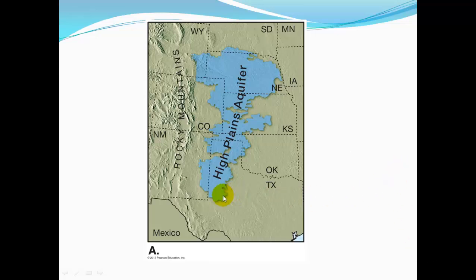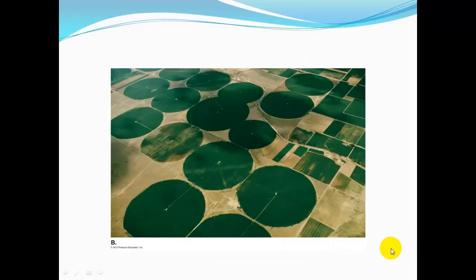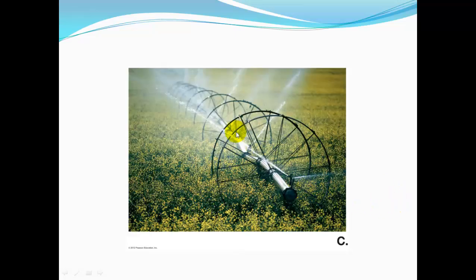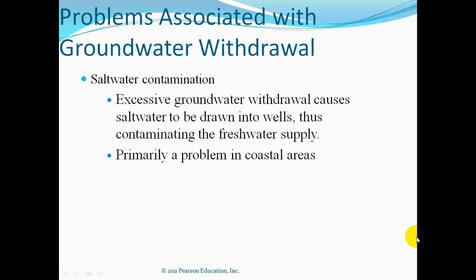Here's an example of the High Plains aquifer — you can see how many states it crosses. It's a resource you really need to manage on a regional level to protect it. These are irrigation fields where in the center of each circle is a well, and an irrigation rig travels around in circles watering the plants.